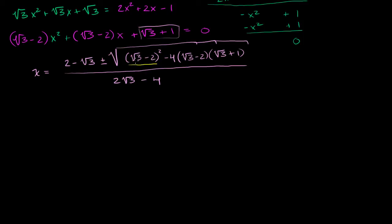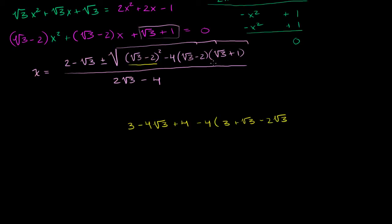We're going to square this whole thing. That's going to be square root of 3 squared, which is 3, minus 2 times their product — so that's minus 4 square roots of 3 — and then plus 2 squared, so plus 4. And then we have minus 4 times square root of 3 times square root of 3, which is 3. Square root of 3 times 1 is plus square root of 3. Negative 2 times square root of 3 is negative 2 square roots of 3. And negative 2 times 1 is negative 2.